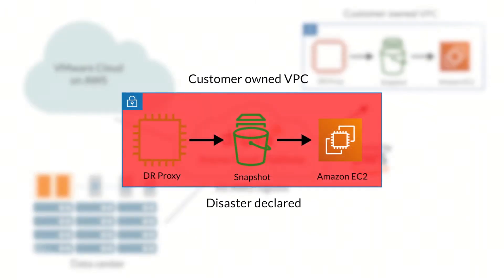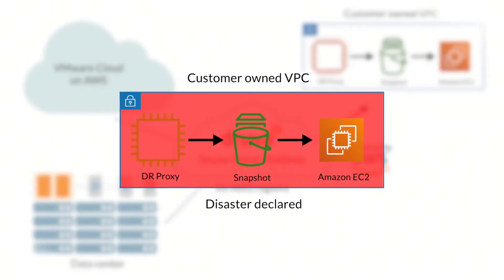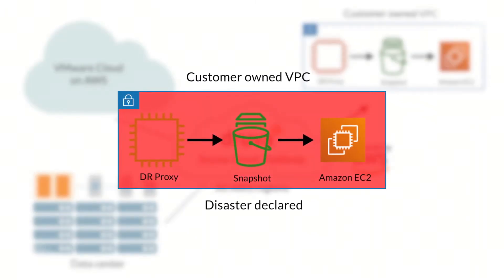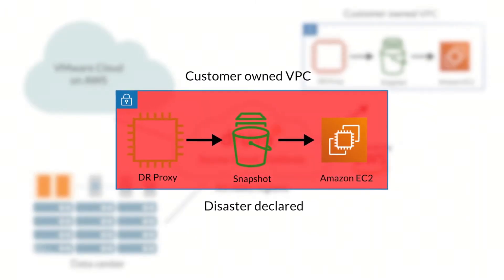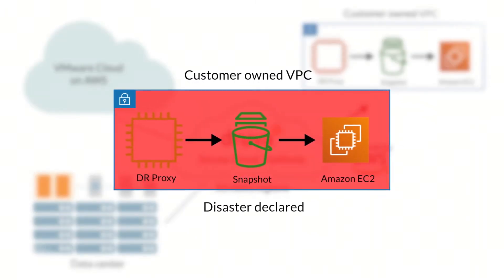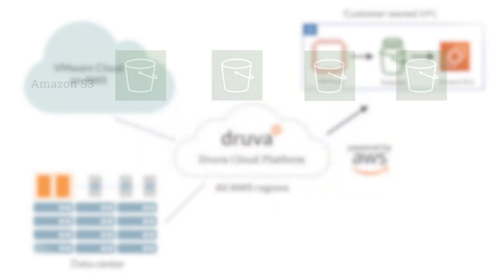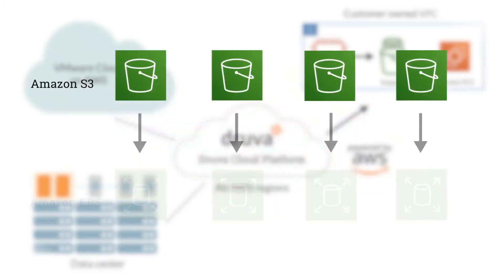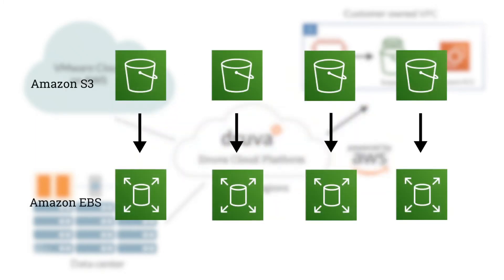After a disaster strikes, Druva launches Amazon EC2 instances, then restores your data from Amazon S3 to Amazon EBS volumes, and restarts your applications — all in about 15 minutes.